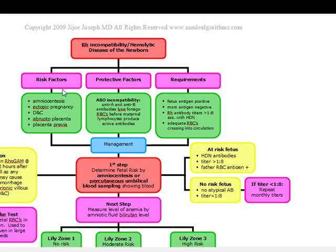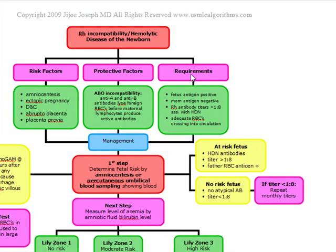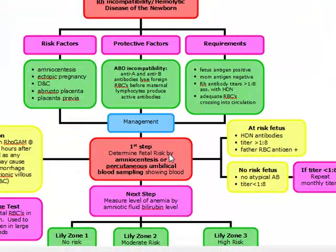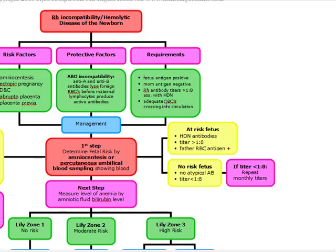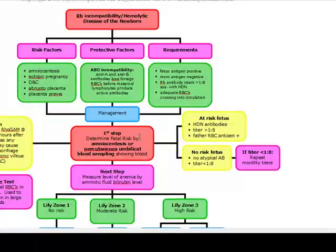Now that we know the risk factors, protective factors, and diagnostic criteria, let's talk about how to manage these patients. The first step is to determine if there's a fetal risk. The way we do this is by amniocentesis or percutaneous umbilical blood sampling. Fetal risk is only present if all of the diagnostic requirements are positive.